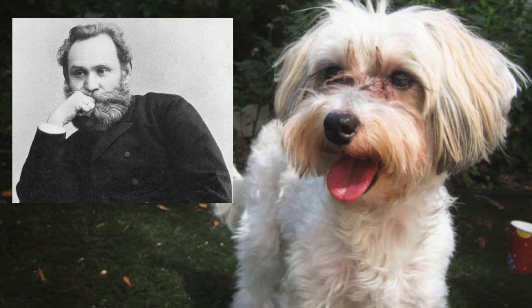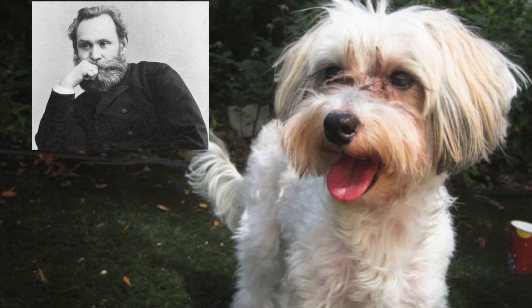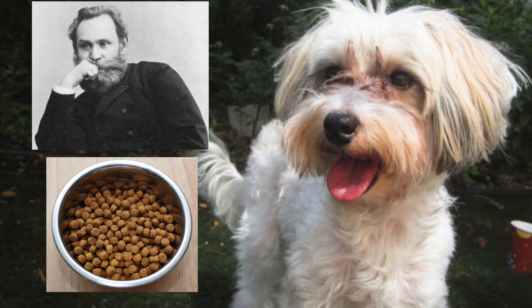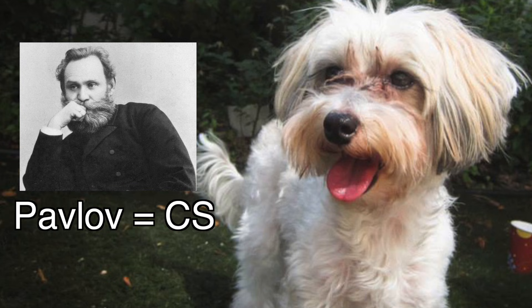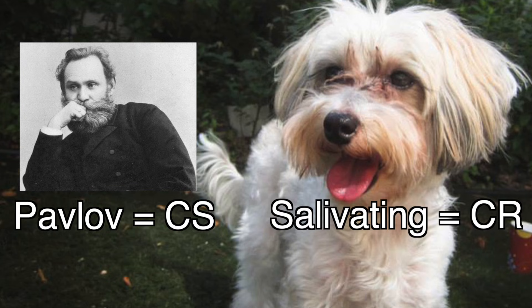But Pavlov's dog started salivating when he walked in the room. Why? Every time Pavlov walked into the room, the dogs got food shortly after. The dogs learned that seeing Pavlov meant food was about to come next, so might as well salivate now. Pavlov had gone from neutral stimulus to a conditioned stimulus that led to the now conditioned response of salivating.